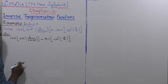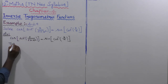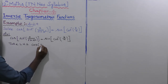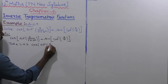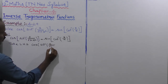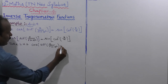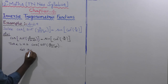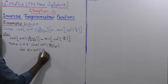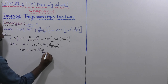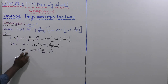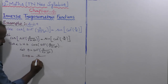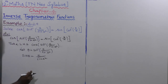Let us take LHS: cos of sin inverse of x divided by root of 1 plus x square. Let us consider this value is theta. So theta is equal to sin inverse of x divided by root of 1 plus x square. Moving sin to the left side: sin theta is equal to x divided by root of 1 plus x square.